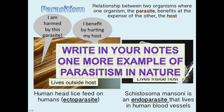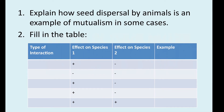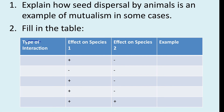This has been a short and sweet screencast. Please write one more example of parasitism in your notes so we can go over them in class. Then answer these two questions: explain how seed dispersal by animals is an example of mutualism in some cases. Also, draw the interaction table in your notes and fill in the effect on each species and give an example of each type of interaction we covered.